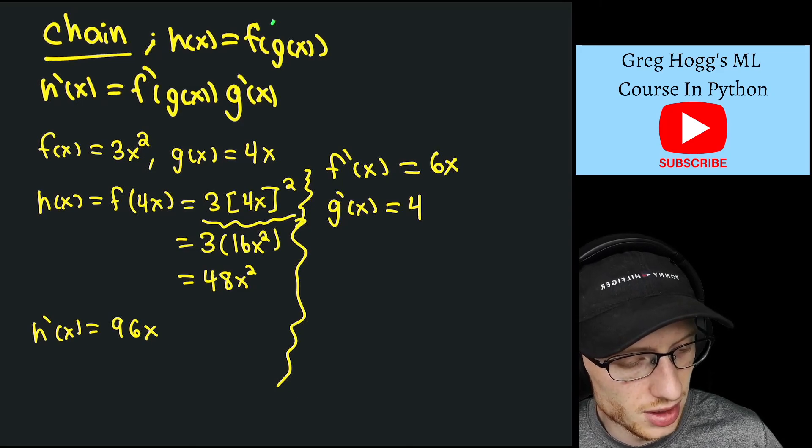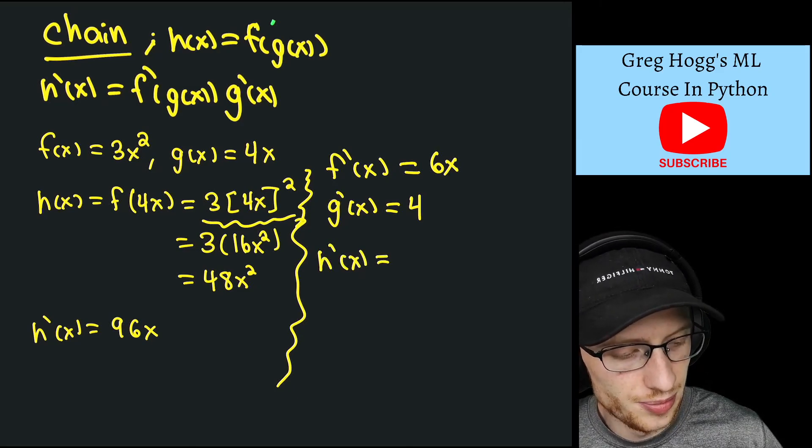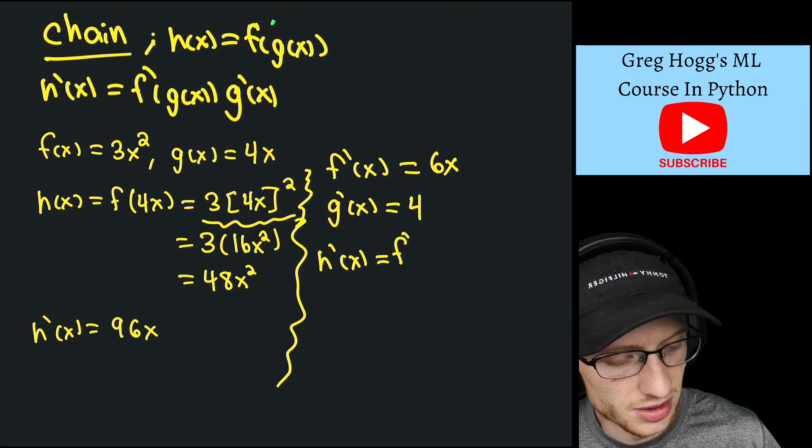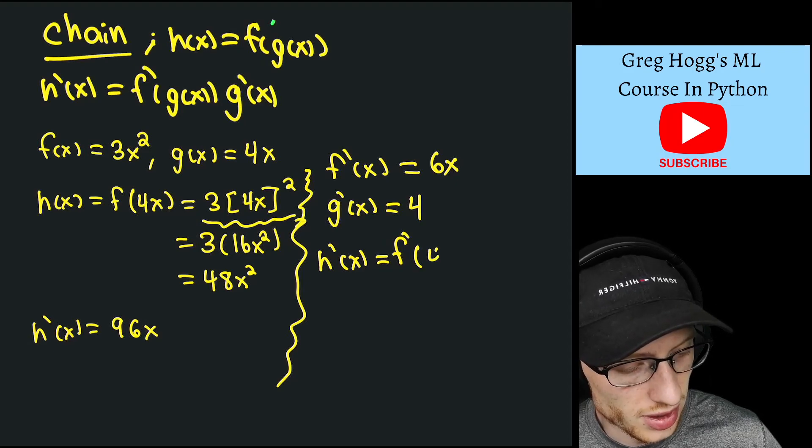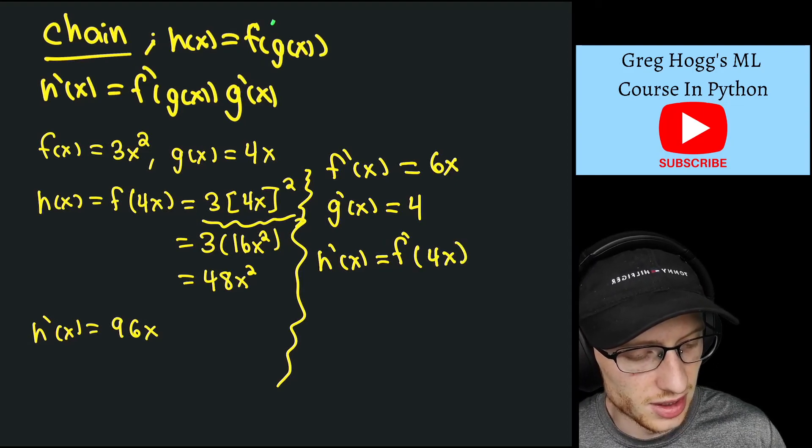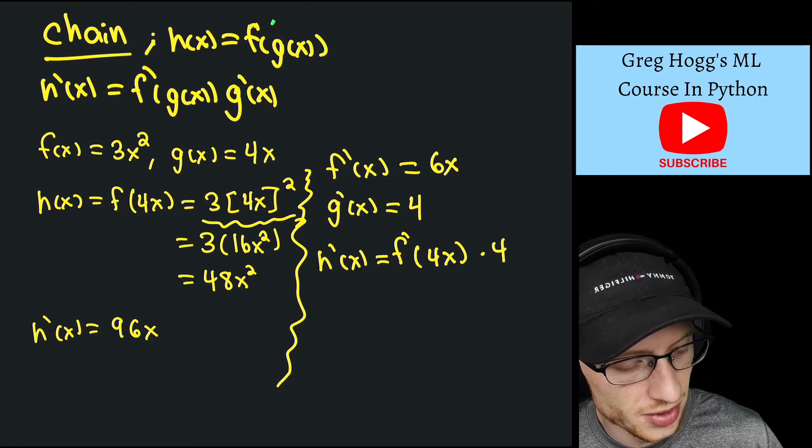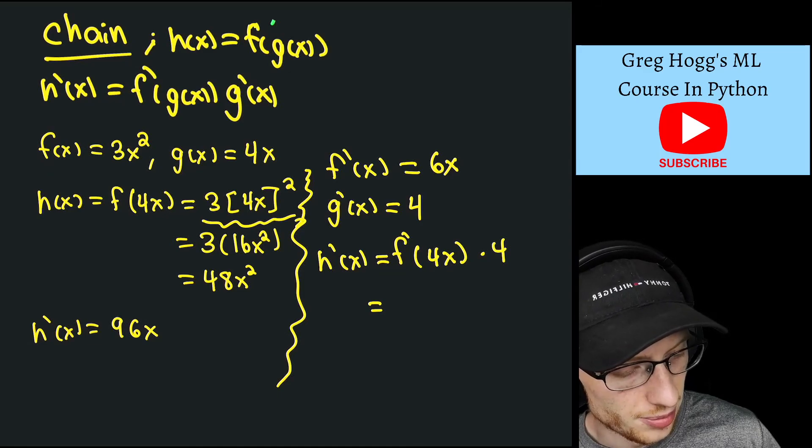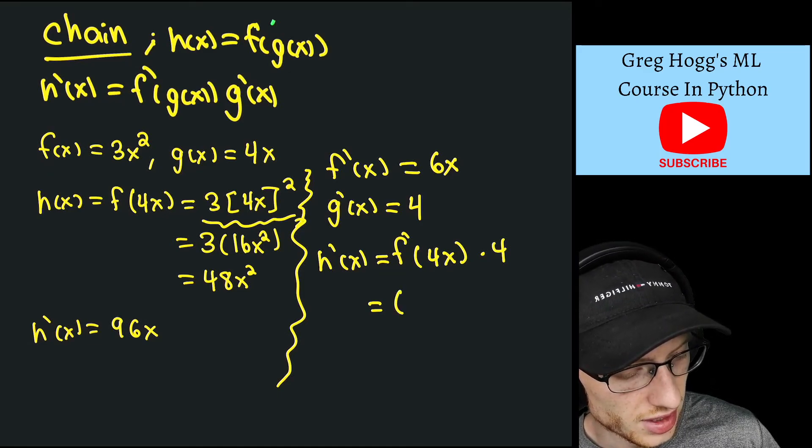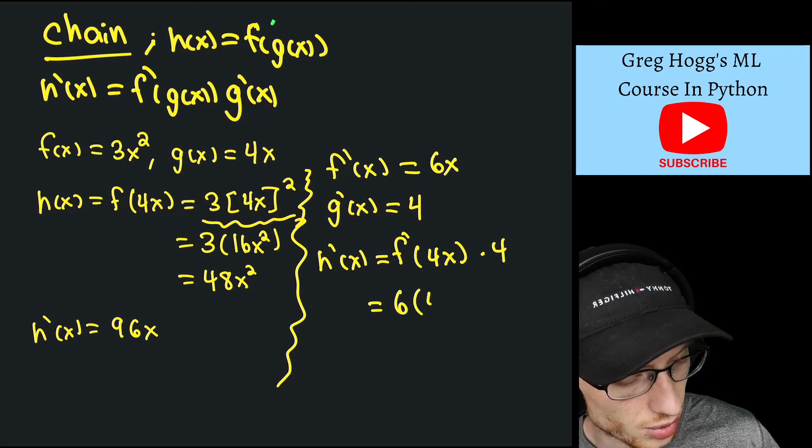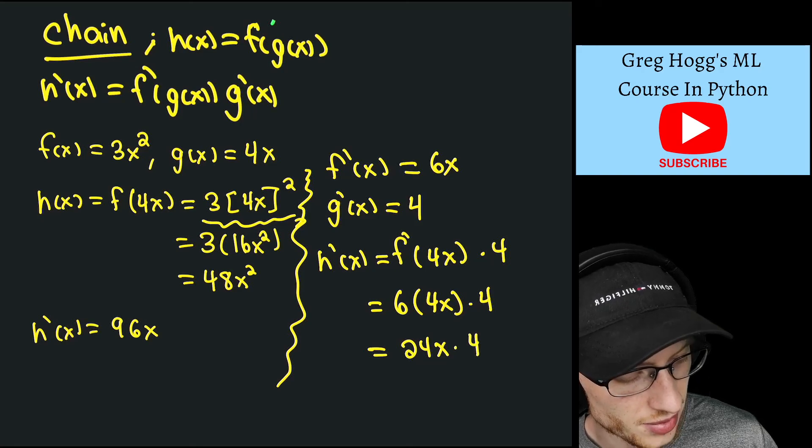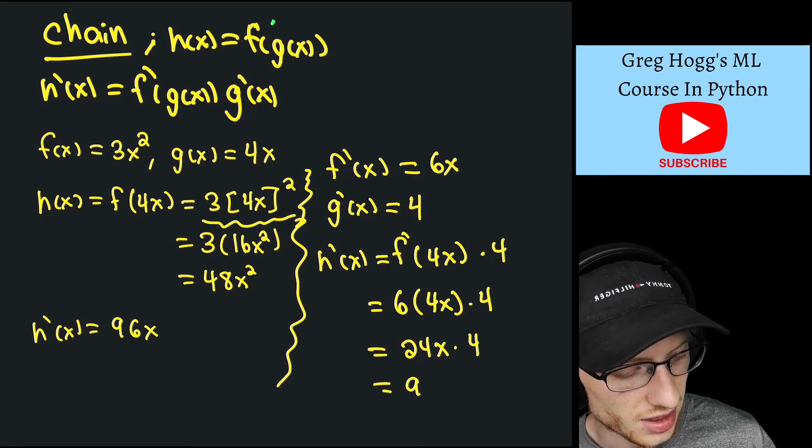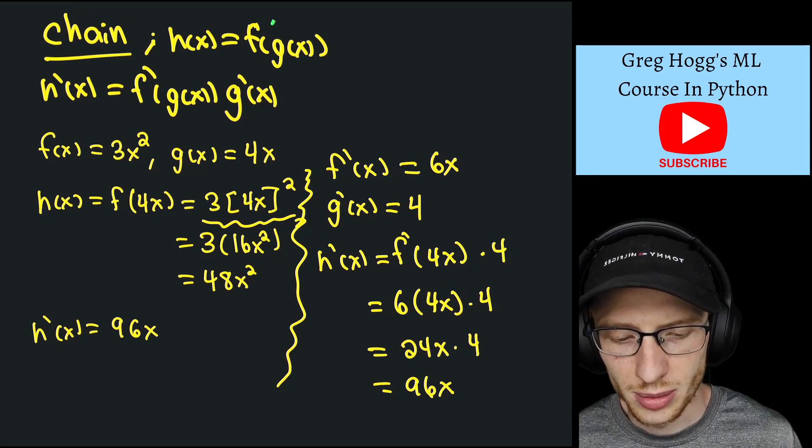And so h'(x) must be equal to f', so that's, we'll just write it as this for now, f'(g(x)), which is 4x, and then we're going to multiply this thing by g'(x), which is just 4, so that's equal to f', and the f' is 6x, so this is actually 6 times 4x, times 4, which is equal to 24x, times 4, which is the same thing, it's 96x. So that was an example for the chain rule.